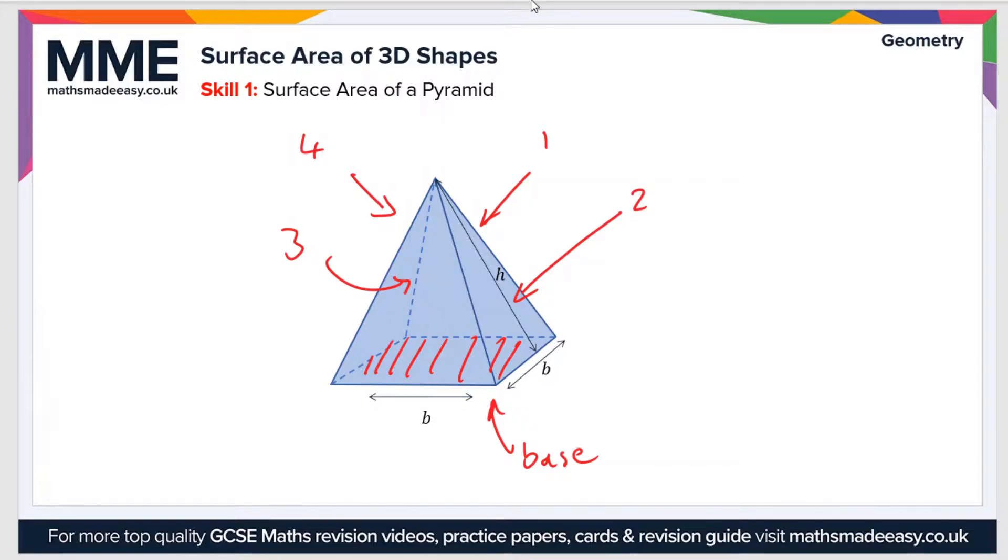So the total surface area is going to be four times the area of the triangular face, which is a half times base times height, plus the area of the base, which is just base times base. So that's how to calculate the volume of, sorry, the surface area of a pyramid.